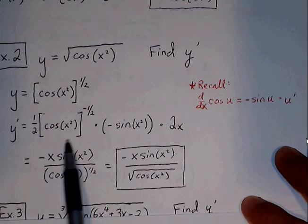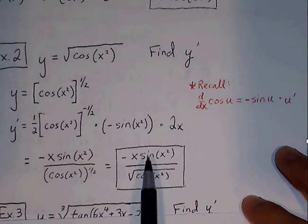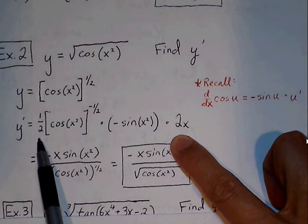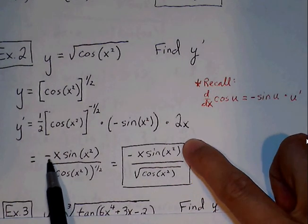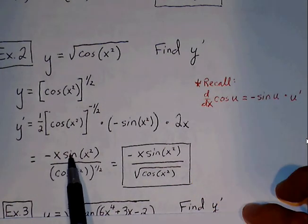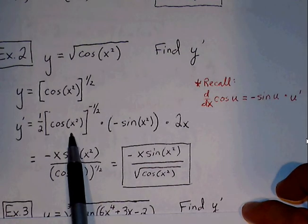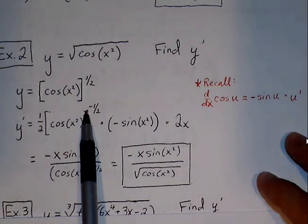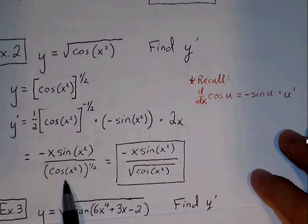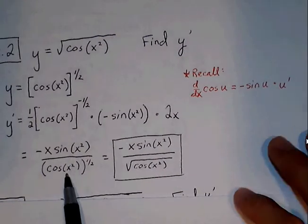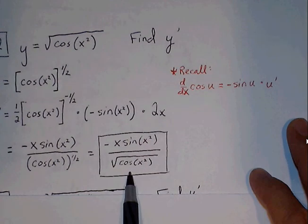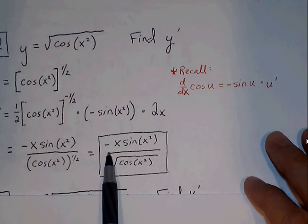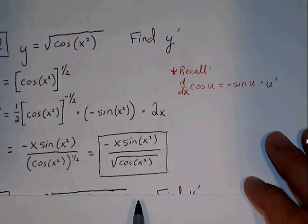Now we put all of this together as one fraction. The twos cancel out. The x and sine of x squared stay in the numerator. The cosine of x squared moves to the denominator because we have a negative exponent — cosine of x squared to the 1 half — which we can rewrite back in radical form as the square root of cosine of x squared, with the numerator being negative x sine of x squared.